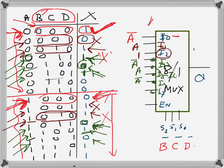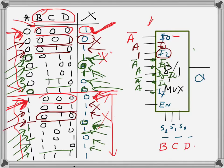For i6, selected when BCD=110: looking at both parts of the truth table I see 0 and 0 for A=0, and 1 and 1 for A=1 — whatever the input is goes to the output, so i6 connects to A. Finally for i7, selected when BCD=111: similarly 0 maps to 0 and 1 maps to 1, so i7 also connects to A.